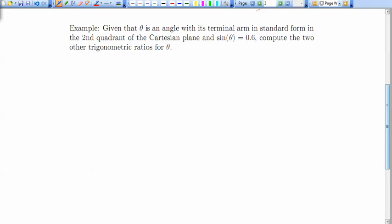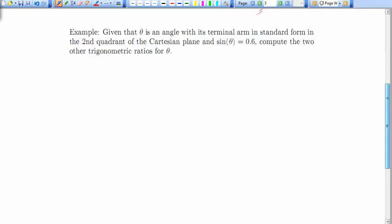Let's say that we've got an angle theta that has a terminal arm in the second quadrant when we draw it in standard position. And we know that the sine of theta is 0.6. We can use the two identities above to figure out the other trig ratios. So let's put them back on the screen.